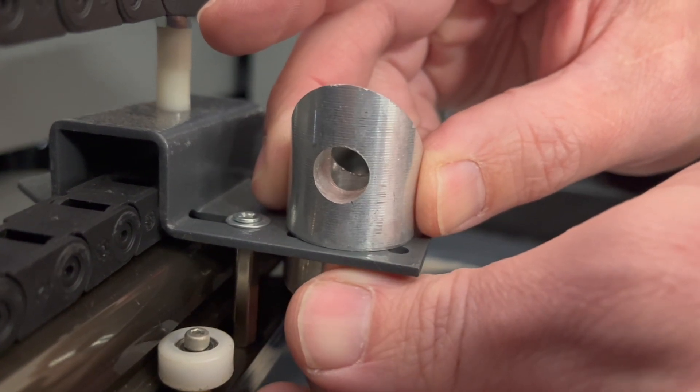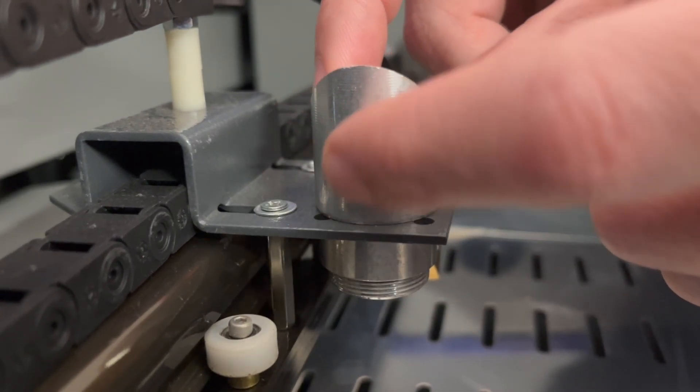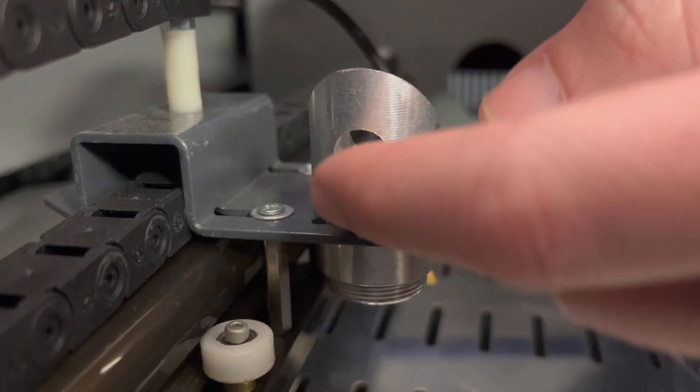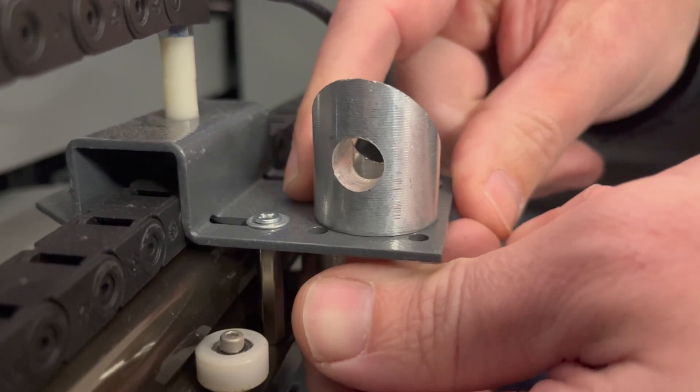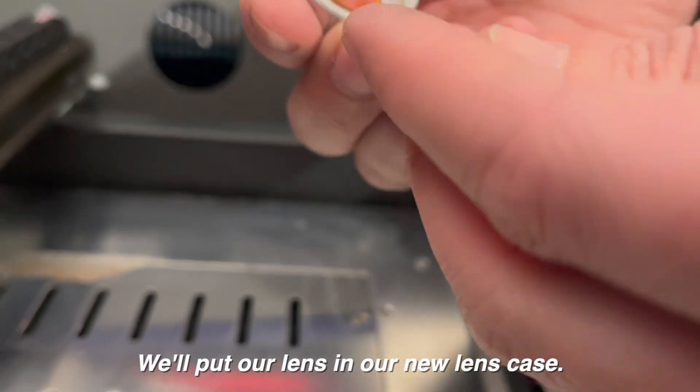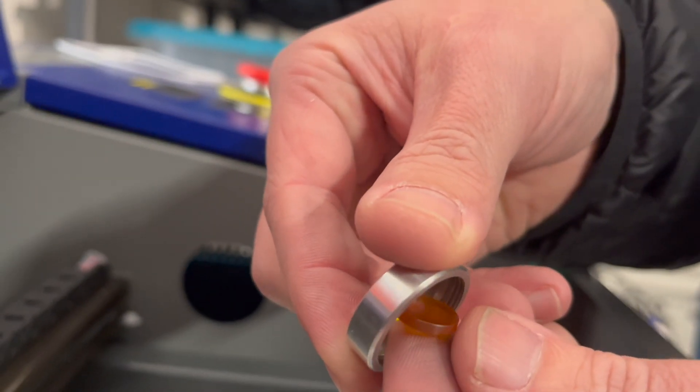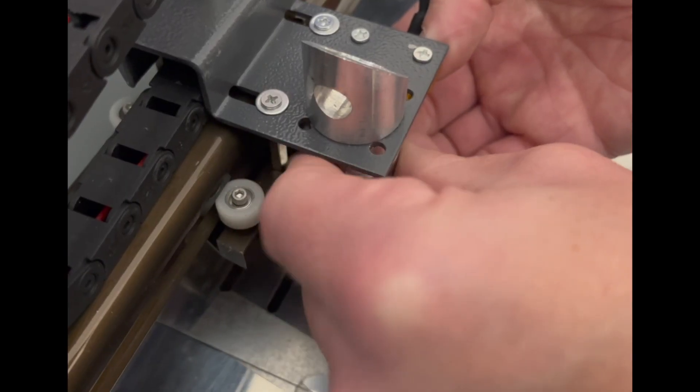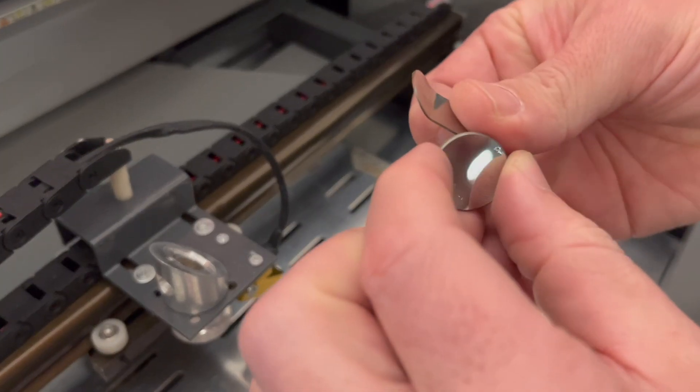So I'm just approximating right now where this should be. We will have to center this so that we can get a good burn with our laser. Like we actually have to do some adjustments. But right now I'm just getting it kind of where I think it should be and then we'll tighten it in a bit. And put our lens in our new lens case. And there is an orientation that you're supposed to get this because one side is convex. I'll clean that later.